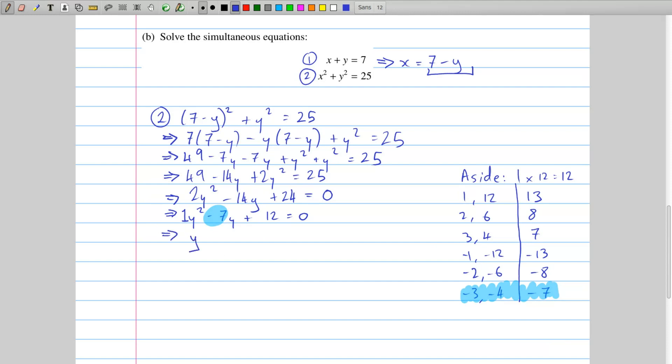And so I rewrite this, where instead of a minus 7y, I write these two factors. So a minus 3y and a minus 4y. I still have this plus 12 trailing at the end, and I still have it equals 0.